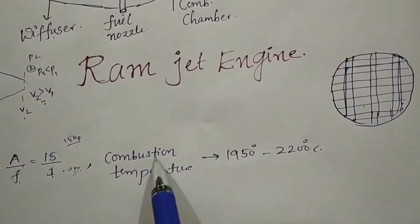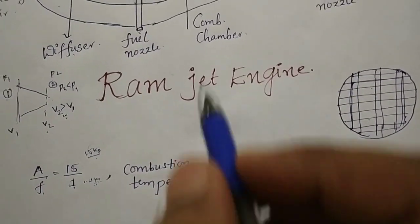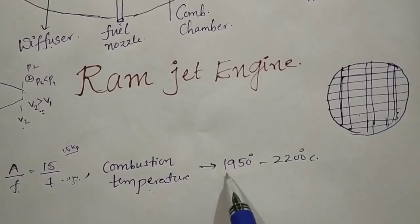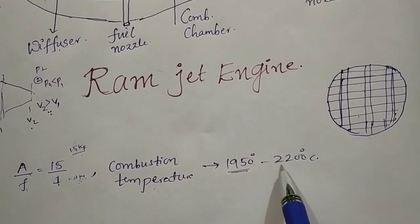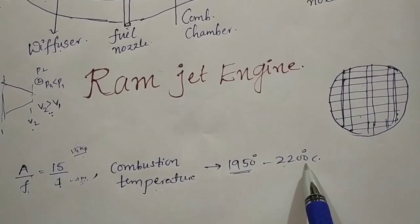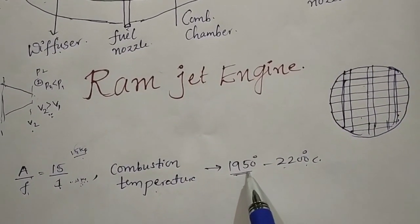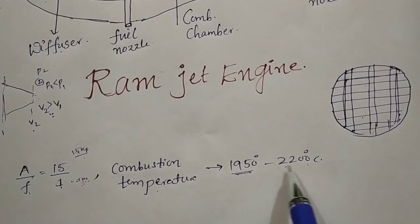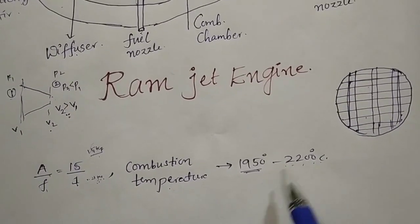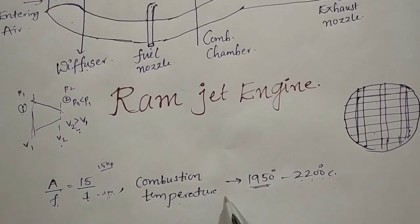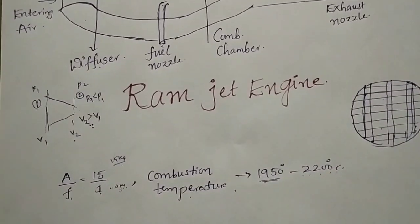Next is the combustion temperature. The temperature produced in the combustion chamber ranges from 1,950 degrees Celsius to 2,200 degrees Celsius.